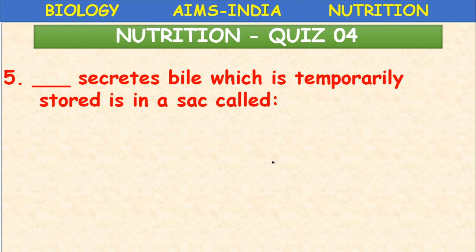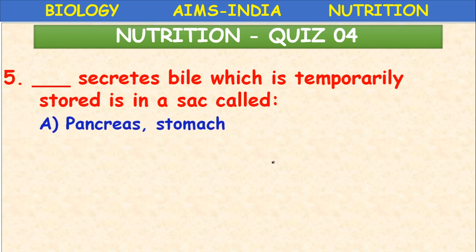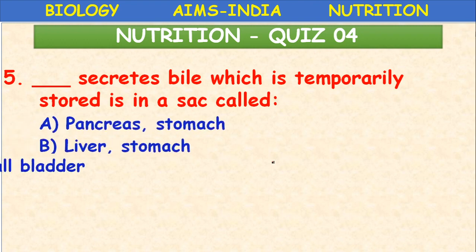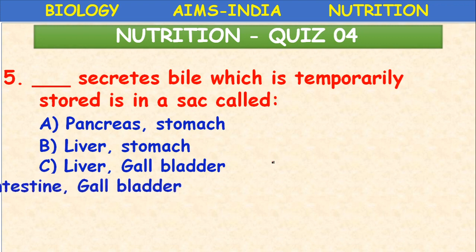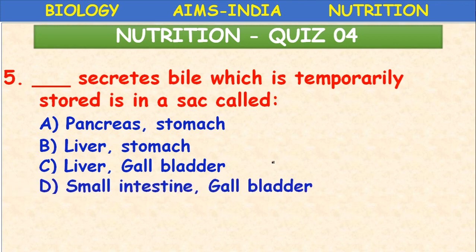Which organ secretes bile, and where is it temporarily stored? The liver secretes bile, and it is temporarily stored in the sac called the gall bladder. The correct answer is liver and gall bladder.